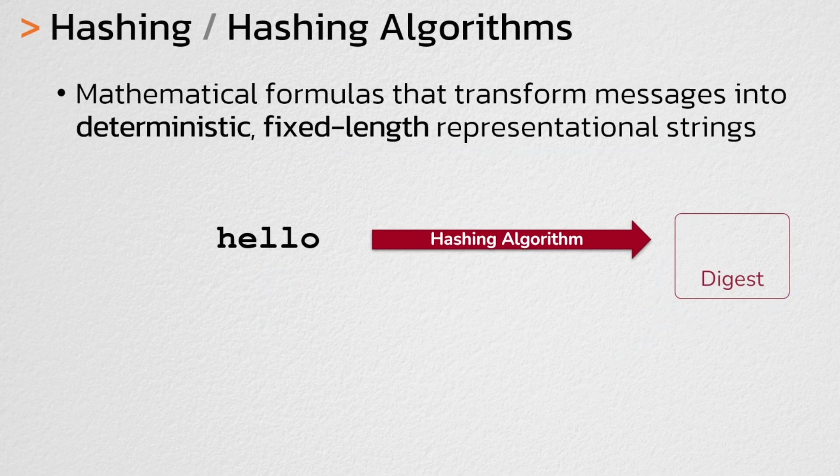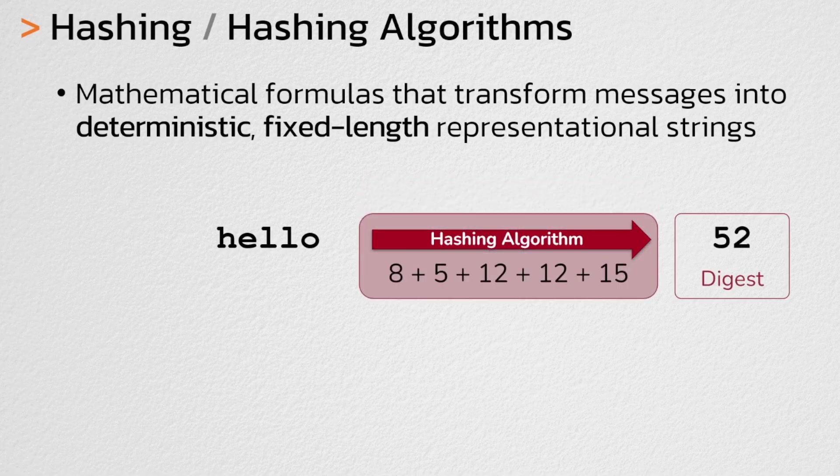A simple example of a hashing algorithm could be something like adding up the letter values of the original message. Here we're adding the letter values of the word hello. H is the 8th letter of the alphabet, E is the 5th letter, L is the 12th letter, and O is the 15th letter. If you add all those up you end up with a digest of 52.